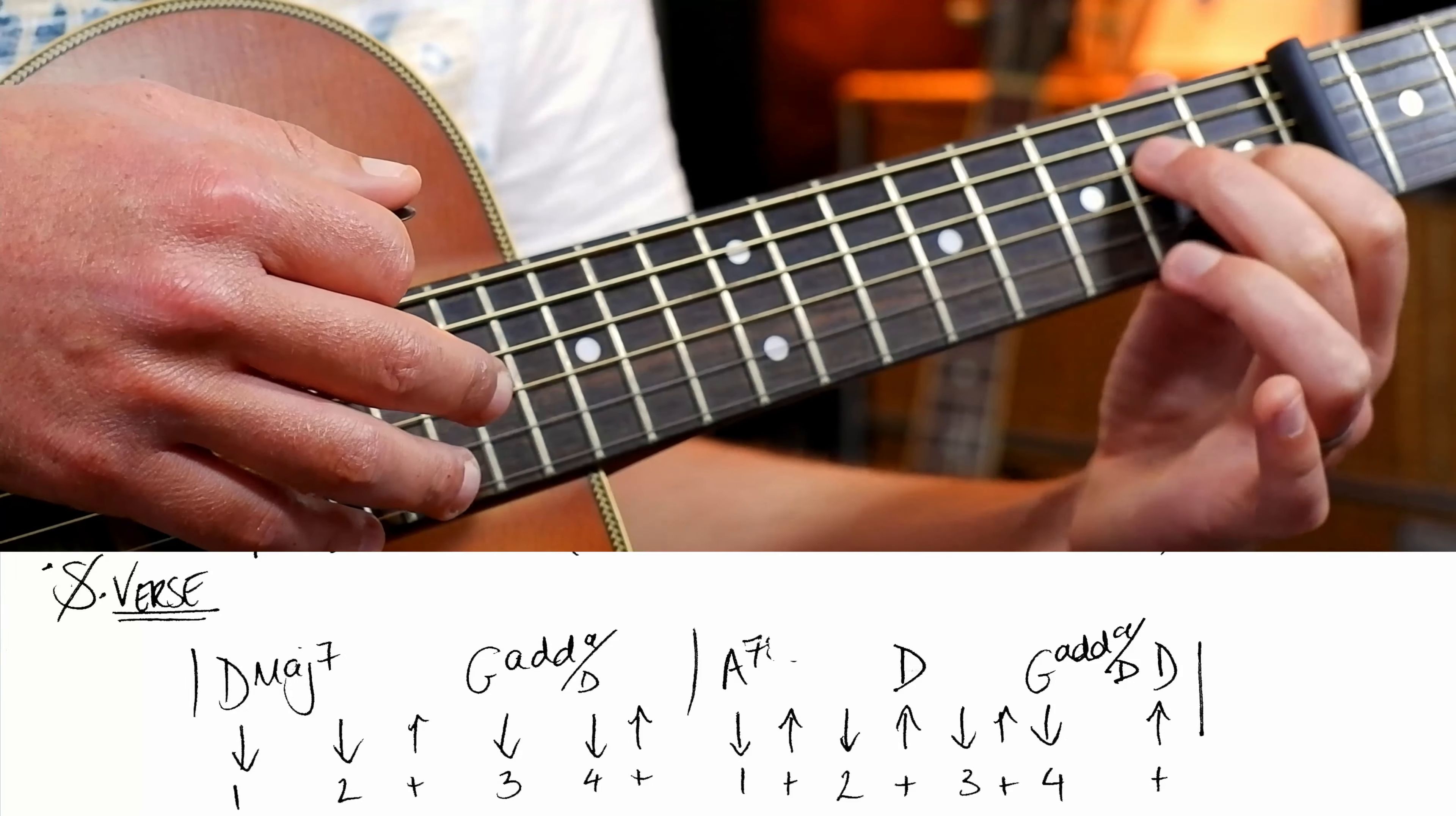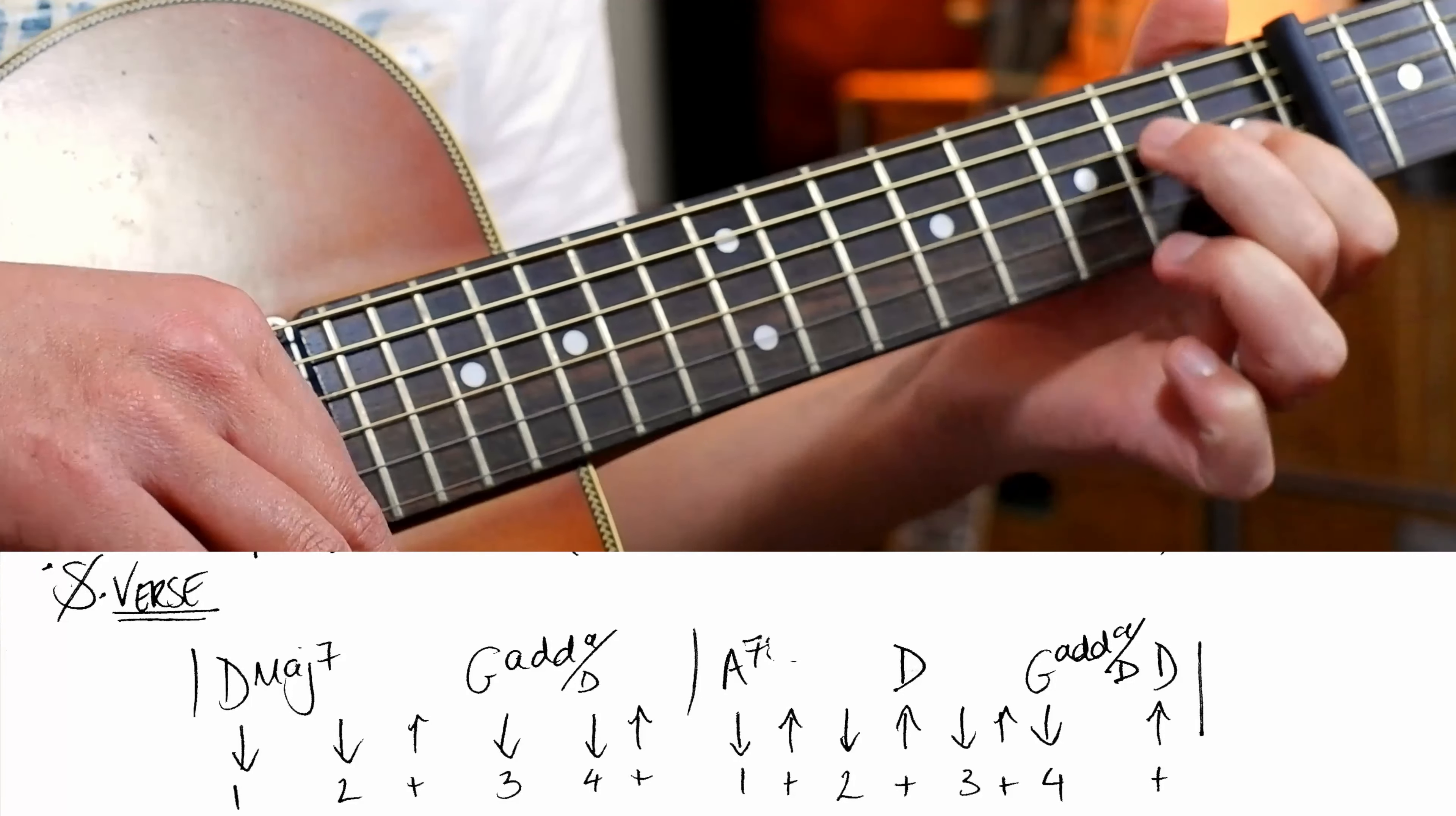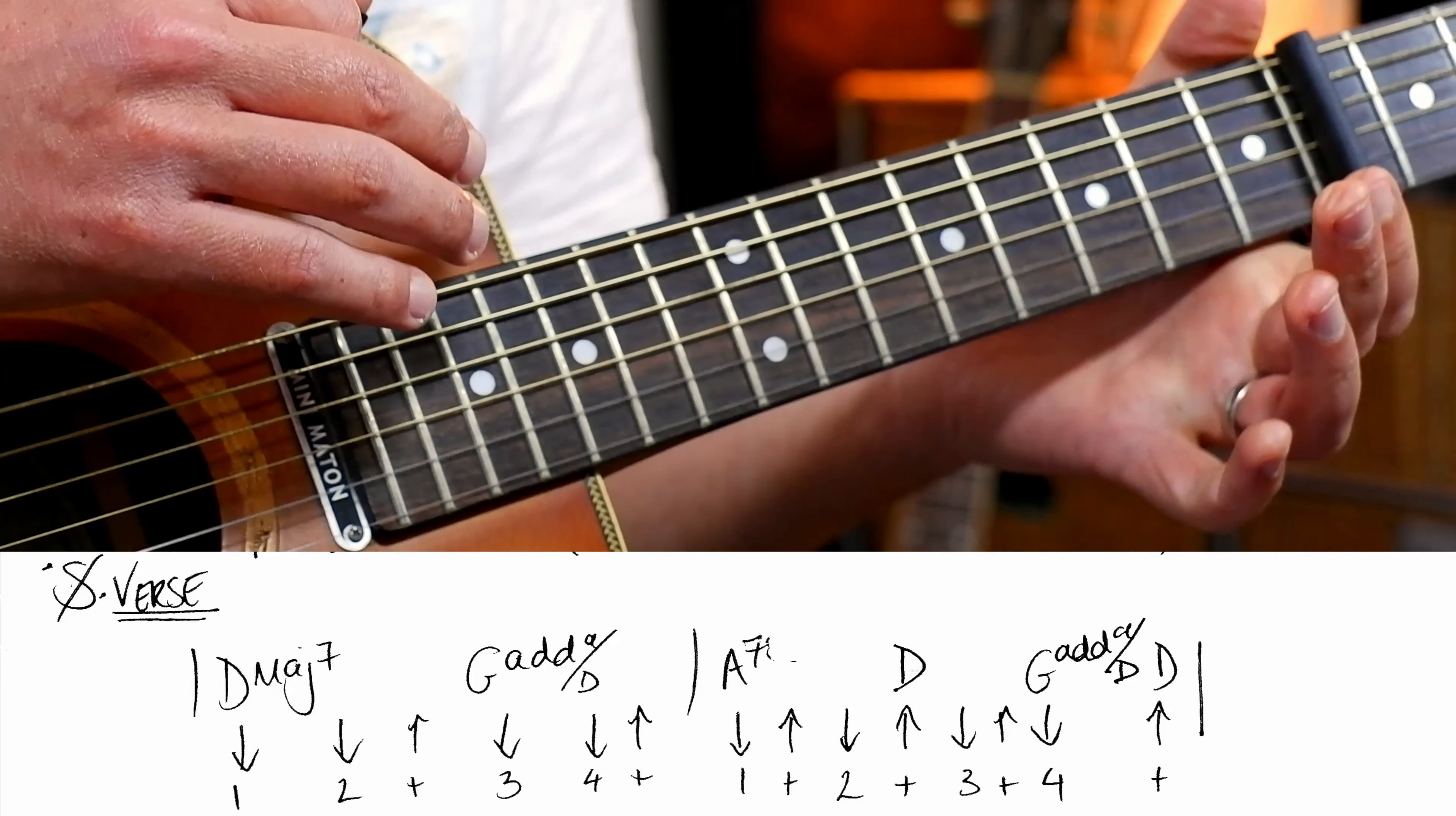All right, second bar. We're going to move to A7. So you just need to jump your second finger onto the fourth string. And your third finger is going to go on the high string. High sounding string. There it is. So we're going to play that bar as one and two and. All right? One and two and three and four and. Okay, so A7.